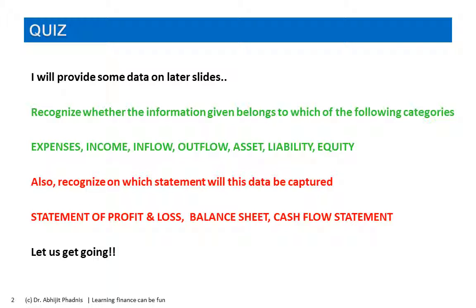Which are those seven ideas? Expenses, income, inflow, outflow, asset, liability and equity. So what you are going to do is classify the given data within those seven buckets. As I have shared in one of the earlier videos, these seven ideas actually map into three financial statements: statement of profit and loss, balance sheet, and cash flow statement.